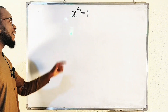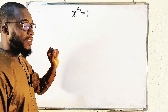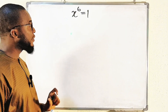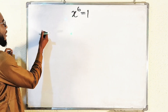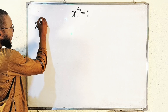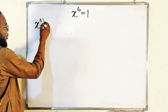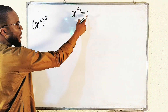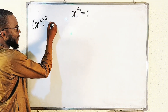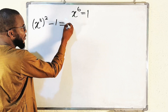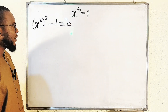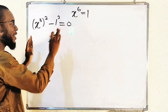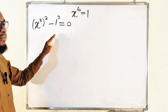x to the power of 6 can be expressed as x to the power of 3, also raised to the power of 2. According to the laws of indices, we can write it as (x³)². We can take 1 inside — it becomes negative 1 — so this is equal to 0. We know that 1 can also be expressed as 1 squared, so we have transformed the equation entirely.